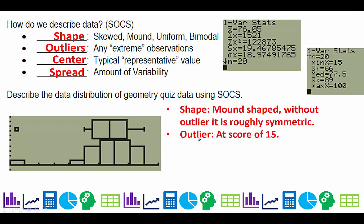The outlier is at a score of 15, which is this point right here. The center, you could use the median of 77.5, or the mean of 76.05, or 76.1.